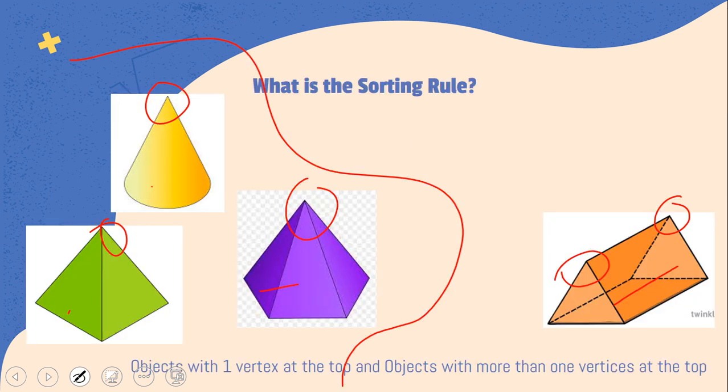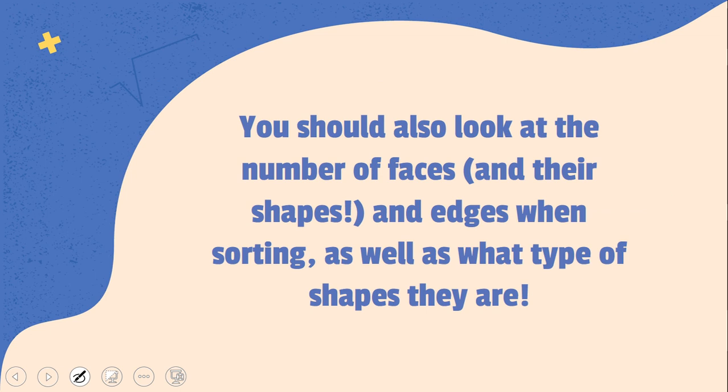And you also should look at what type of shapes they are. So, we could have also sorted these based on the fact that we could put them in three groups. So, you could put them in as a prism, pyramid, and cone. So, you guys can come up with your own sorting rules today.